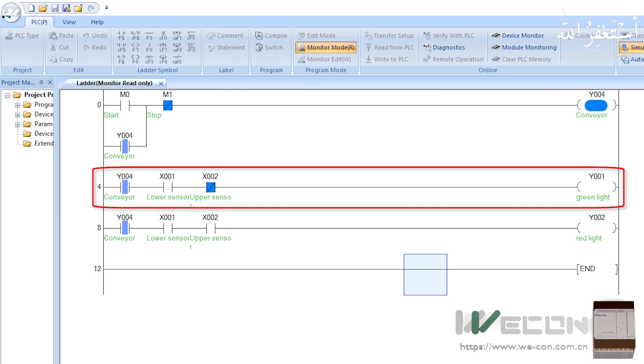In the second rung, we made logic to detect boxes with less height. In the second rung, we insert the normal open contact of X1 sensor and the normal closed contact of the X2 sensor. When a small box comes in front of these sensors, only the X1 sensor will turn on and its contact closes. The X2 sensor will stay off and its contact remains closed. This will turn on the green light Y1 to indicate the detection of the small box.